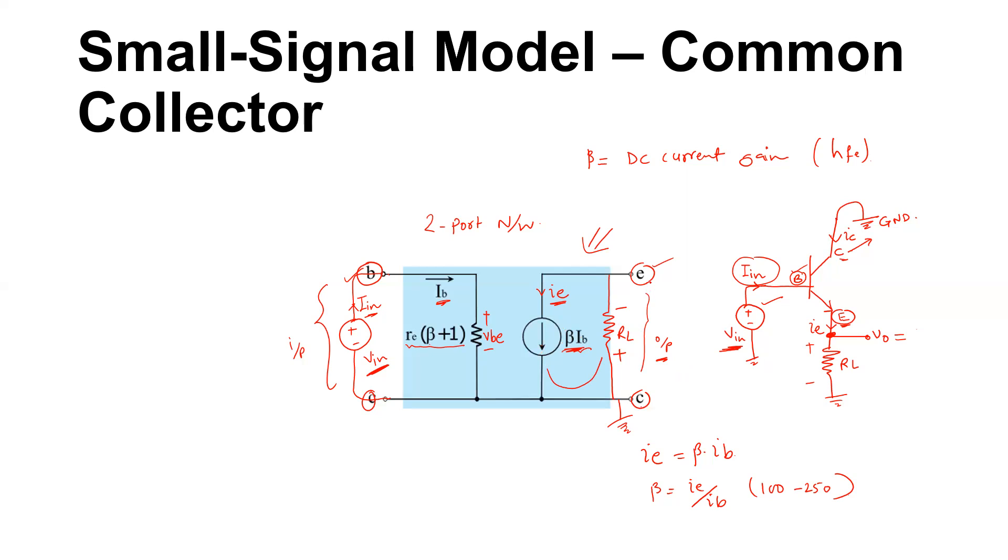So you actually take this voltage as Ie times RL. That is the output current multiplied by this one, or you can neglect the base current and you can also write it as Ic times RL because Ie is approximately equal to Ic. Now you see that there is this dependent current source, current controlled current source, so input current Ib controls the output current Ie. That is the model for the common collector configuration.